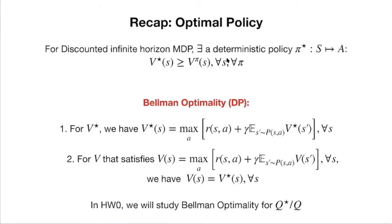In homework zero, you'll study the Q version of this theorem. You can show that not only for V-star but also for Q-star you have these nice equations. Specifically, you'll show that Bellman optimality holds for Q-star, and that given a Q function satisfying the Bellman optimality equation, you can prove Q equals Q-star — using a very similar proof strategy.